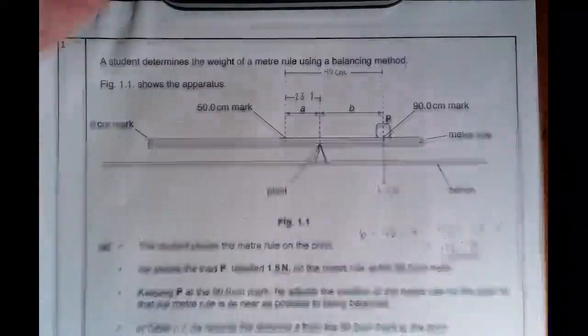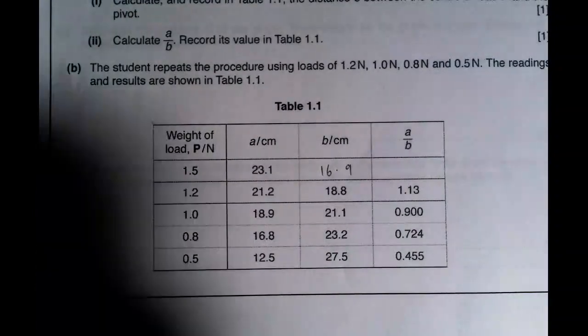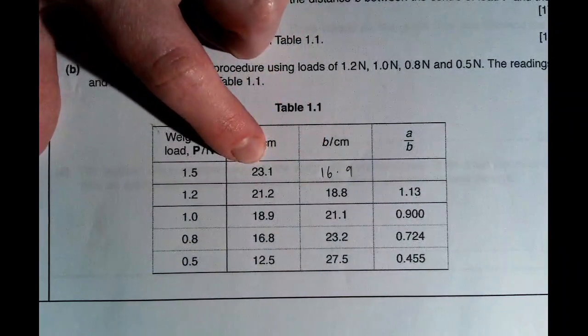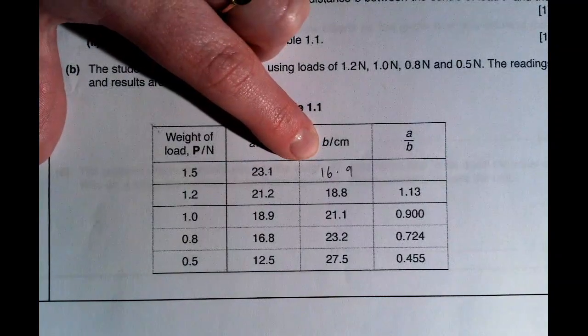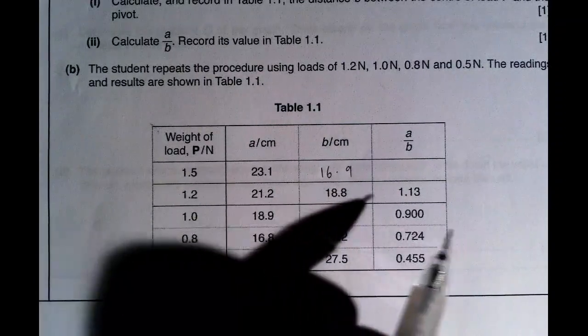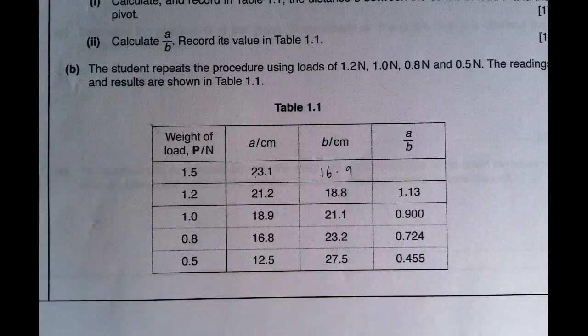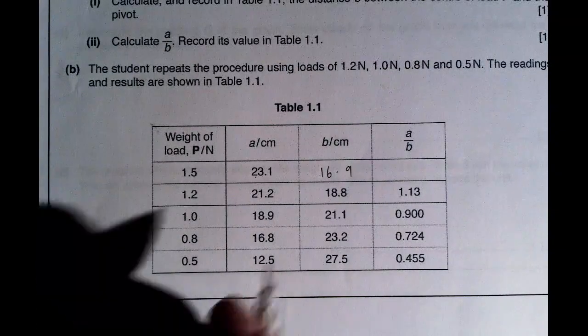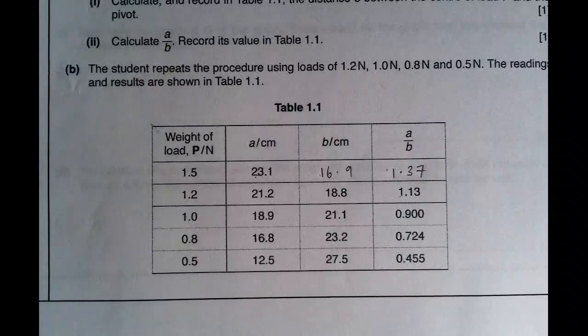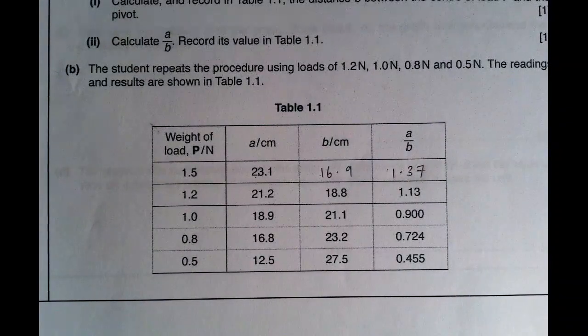So in the metre of b, in centimetres, I'm going to put 16.9. Then to do a divided by b, I literally do 23.1 divided by 16.9, and I'm going to get 1.366. But you can see that this is all to one decimal place here. So really, at most, I can give to 2. So I'm going to go 1.37 there for my values. So now I've filled in my table.